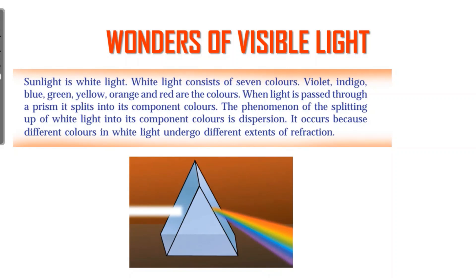Sunlight is white light. White light consists of seven colors: Violet, Indigo, Blue, Green, Yellow, Orange, and Red — that is why we use VIBGYOR. When light is passed through a prism, it splits into its component colors. This phenomenon of splitting of light into component colors is called dispersion. It occurs because different colors in white light undergo different extents of refraction — red undergoes less refraction and violet undergoes more.